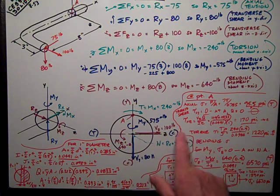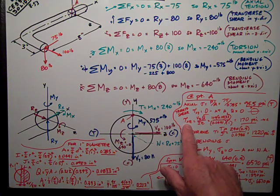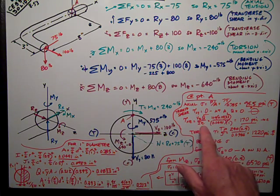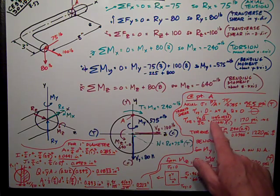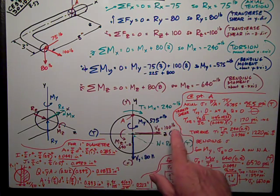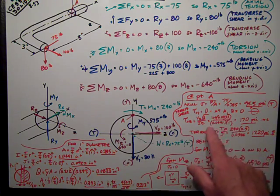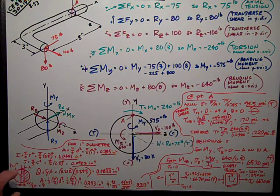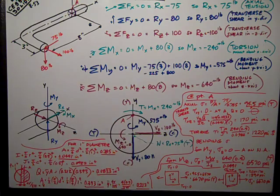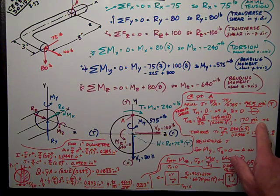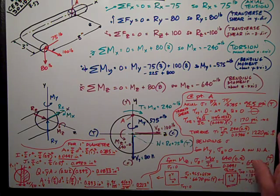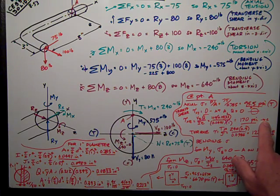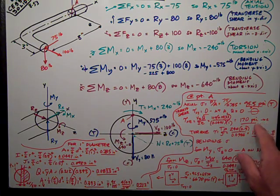But for shear in the Z direction, it's lying on the neutral axis, so it's the point of maximum shear. It's just VQ over IT. The shear in the Z direction is 100 pounds. It works out to be 170 psi in the Z direction. This is ZX or XZ shear.